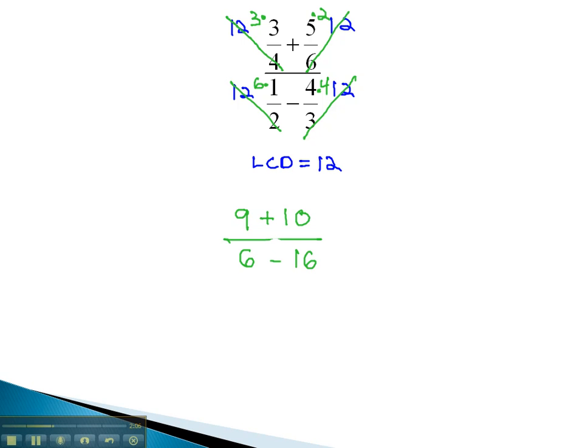We can quickly simplify the numerator and denominator. 9 plus 10 is 19, and 6 minus 16 is negative 10.